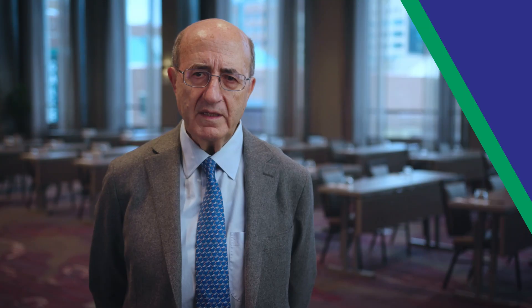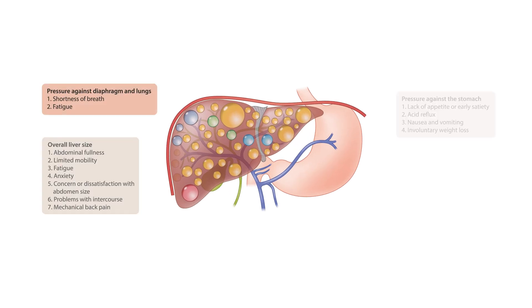Polycystic liver disease is the most common extrarenal manifestation of ADPKD. It is characterized by the presence of more than 10 fluid-filled cysts scattered throughout the liver. In addition to being an extrarenal manifestation of ADPKD, it may occur as a distinct genetic entity in the absence of ADPKD.